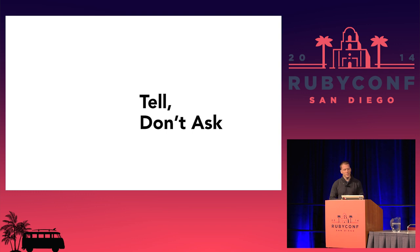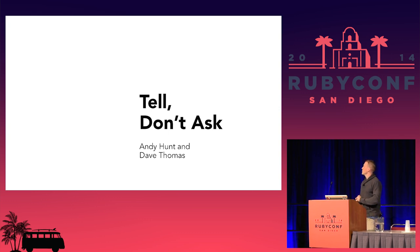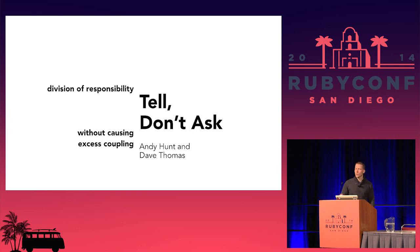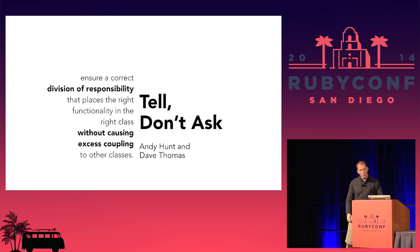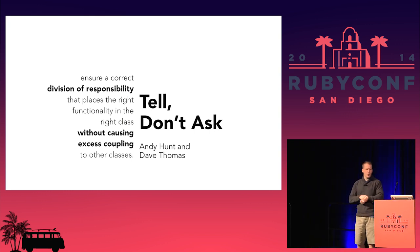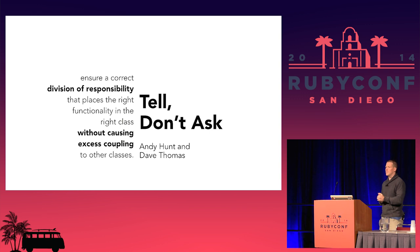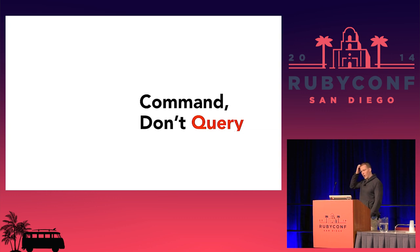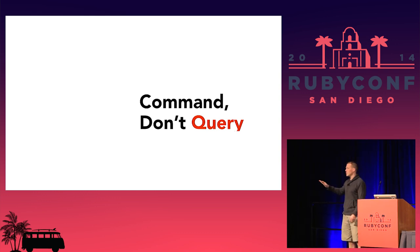Tell Don't Ask is an idea coined by Andy Hunt and Dave Thomas, where they wanted to encourage us to create a division of responsibility without causing excess coupling. When I first read about it, I didn't quite get it — I thought I understood and moved on. It seems to be a perpetual discussion topic for programmers. Another way to think of it: command don't query. Don't ask an object about information and then perform some function for that object — just tell it to do what it has to do.